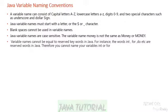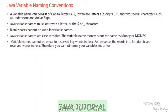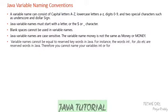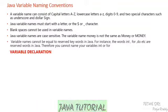Variable names cannot be equal to reserved words in Java. Reserved words include int, float, double, for, do, while, and others. These cannot be used as variable names. These are the naming conventions you need to follow while declaring variables.